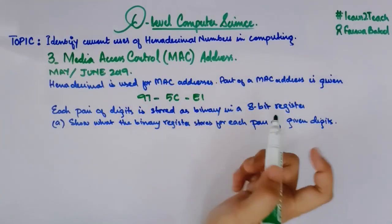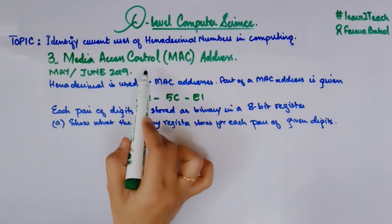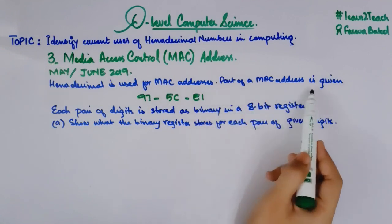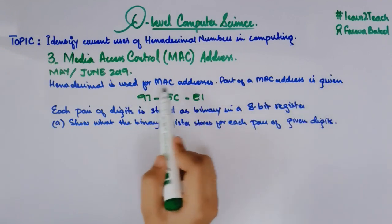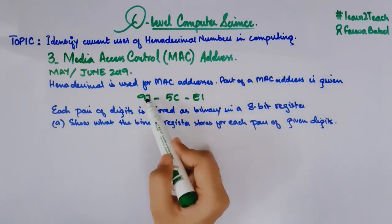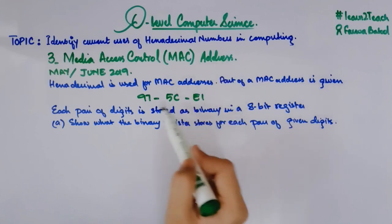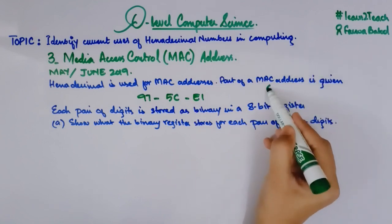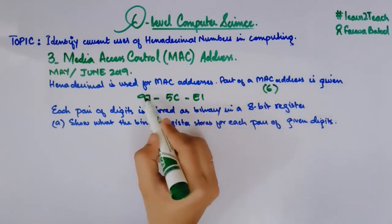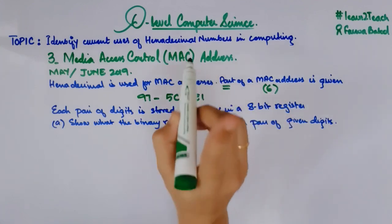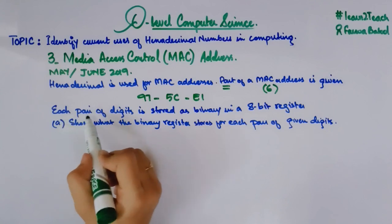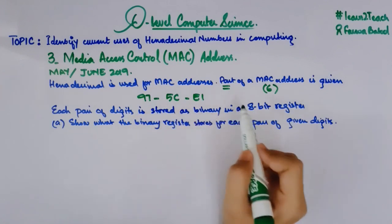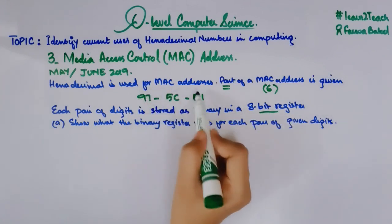Here we have an example from the May/June 2019 paper. It says hexadecimal is used for MAC addresses and a part of a MAC address is given — only three pairs of hexadecimal numbers, whereas a full MAC address has six pairs. Each pair of digits is stored as binary in an 8-bit register. You need to show what the binary register stores for each pair of the given digits.